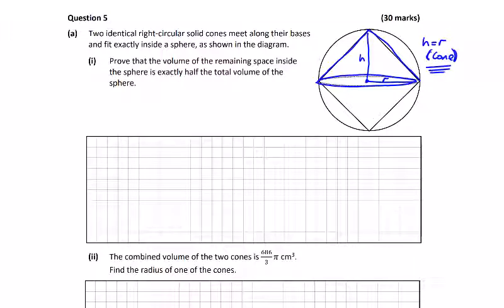And what are we asked to do here? We're asked to prove the volume in the remaining space is exactly half the total volume of the sphere. Okay, well let's get the volume of the sphere first.